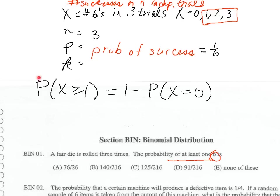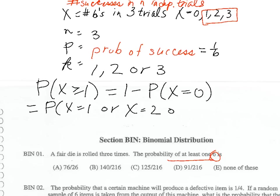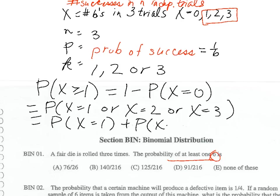We're going to do this the long way — we need special k values of one, two, or three. So we're actually going to calculate P(X=1) + P(X=2) + P(X=3). We need to apply the binomial formula three times.